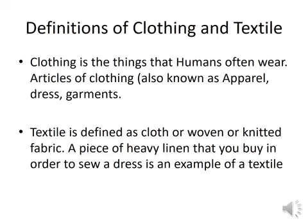Definitions of clothing and textile: Clothing refers to things that humans wear, also known as apparel, dress, and garments. Textile is defined as cloth or woven fabric. A piece of heavy linen bought to sew a dress is an example of textile. The word textile is derived from Latin, meaning 'to weave.' All things made of fabric are considered textiles.